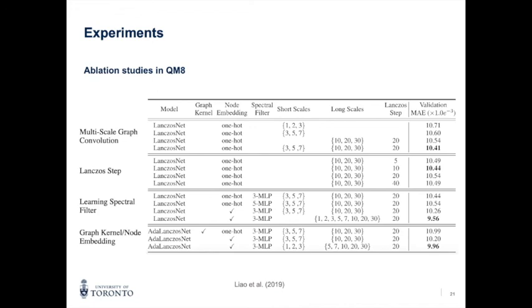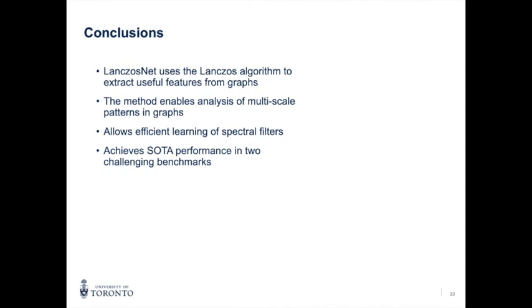The authors also run ablation experiments in the QM8 dataset to evaluate the effectiveness in four areas. In the first experiment, they do not use the spectral filter and use one hot encoding for the node embedding. Here, they show the benefits of using both short and long scales. In the second experiment, they vary the number of iterations in the Lanczos algorithm, showing that 10 brings good results since this number is close to the average number of nodes in the graphs of this dataset. The third experiment adds a multi-layer perceptron as part of the spectral filter to reduce even more the error. And the fourth experiment shows the effects of incorporating the graph kernel and learning the node embeddings instead of using one-hot encoding.